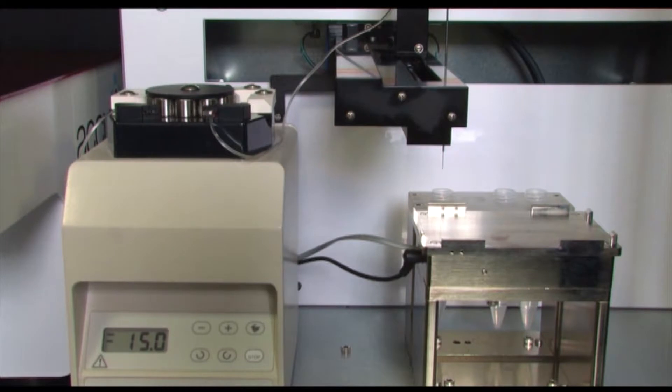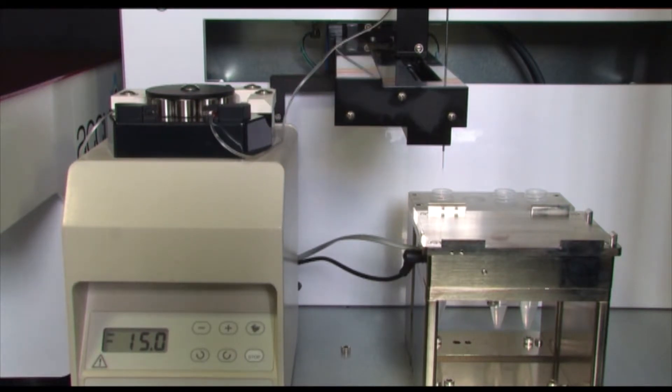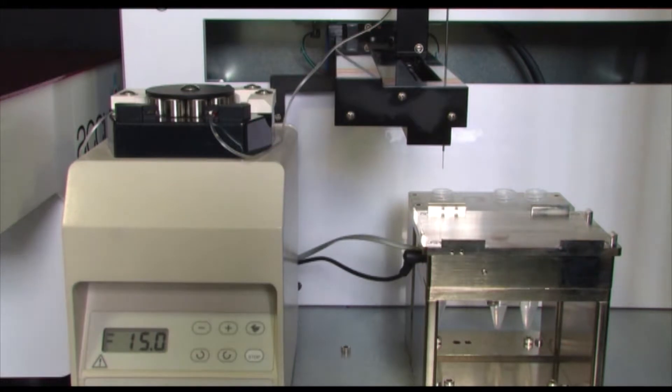While the first plate is being washed, the flow cytometer is primed. The cytometer used in the Sirocco is the C6, which has been developed by Accurie cytometers of Ann Arbor, Michigan. Accurie is now owned by Beckton Dickinson.